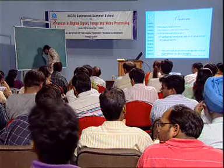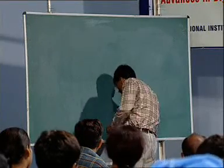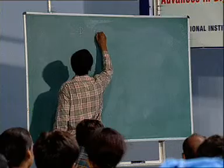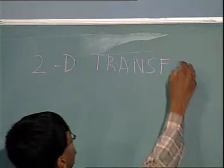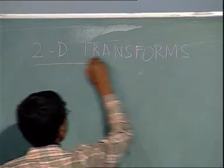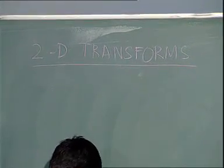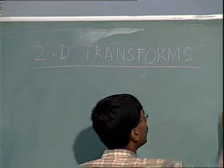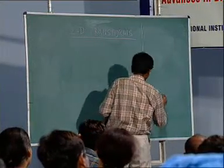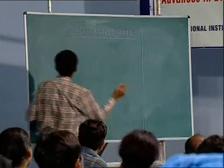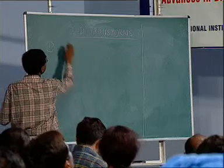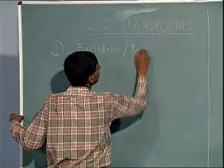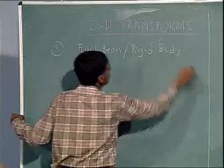Let us suppose we consider two dimensional transformations. Please bear with my horrible handwriting. Essentially the input is a 2D point and the output would also be a 2D point. One part of the board I will leave for drawing an overall diagram. Let us start off with what is called a Euclidean or a rigid body transform.